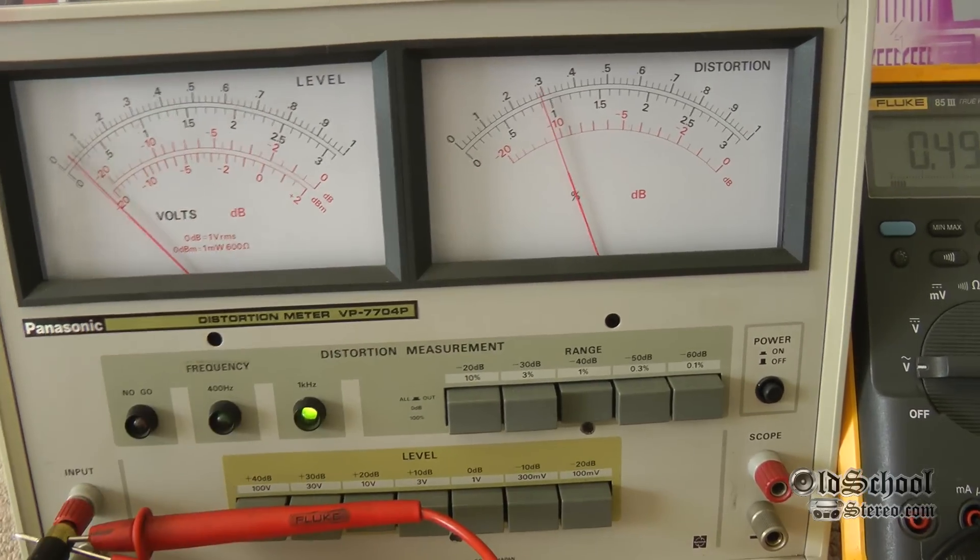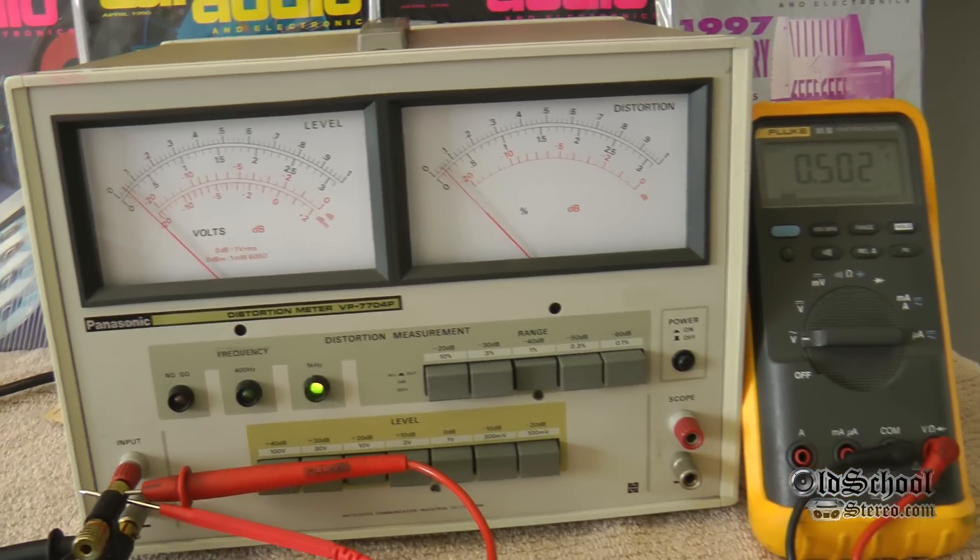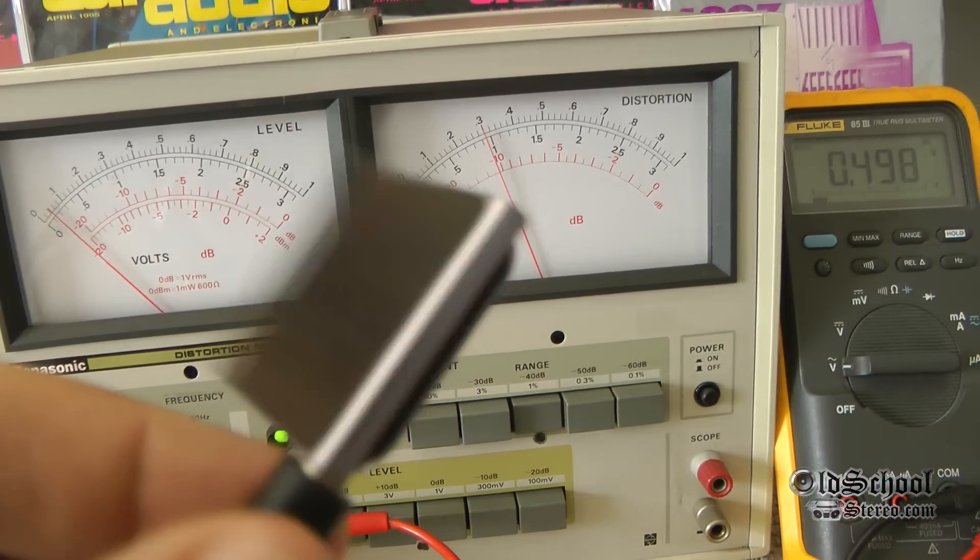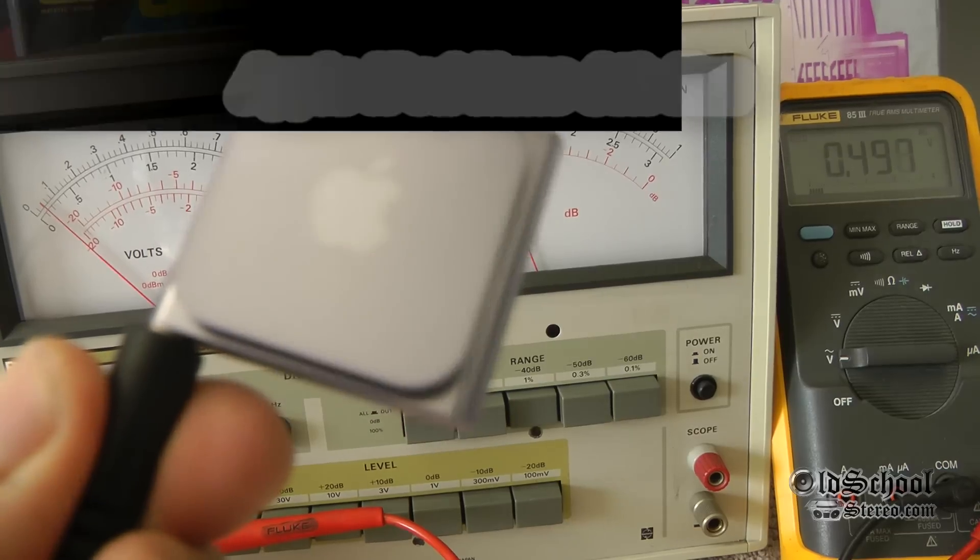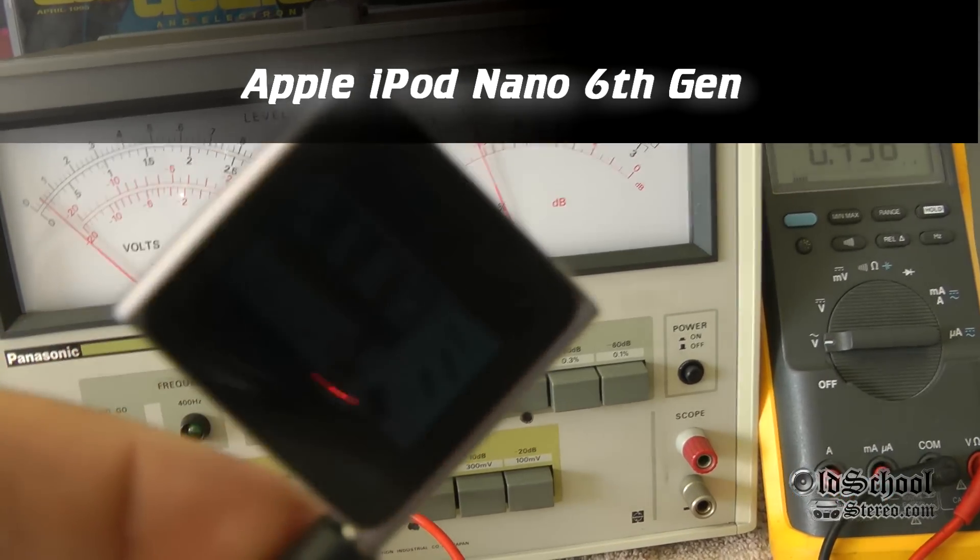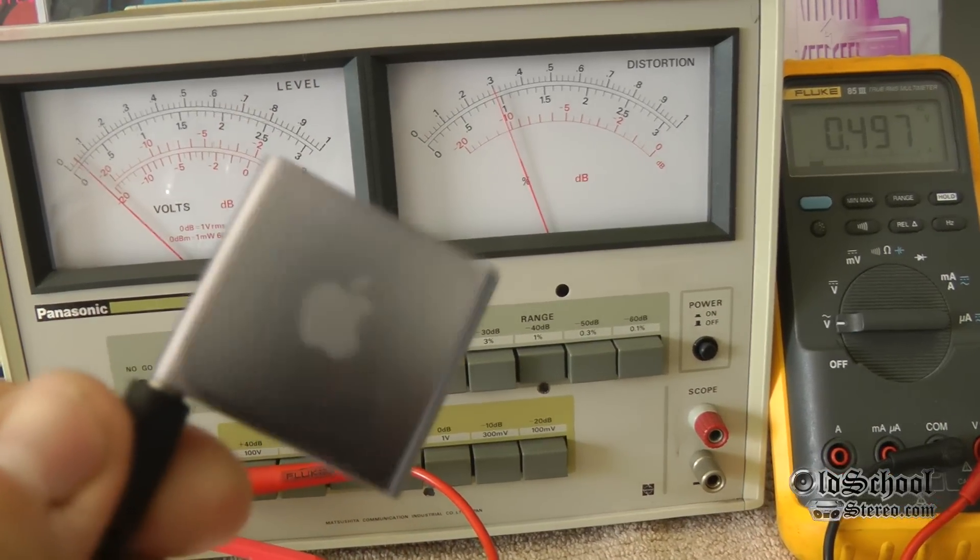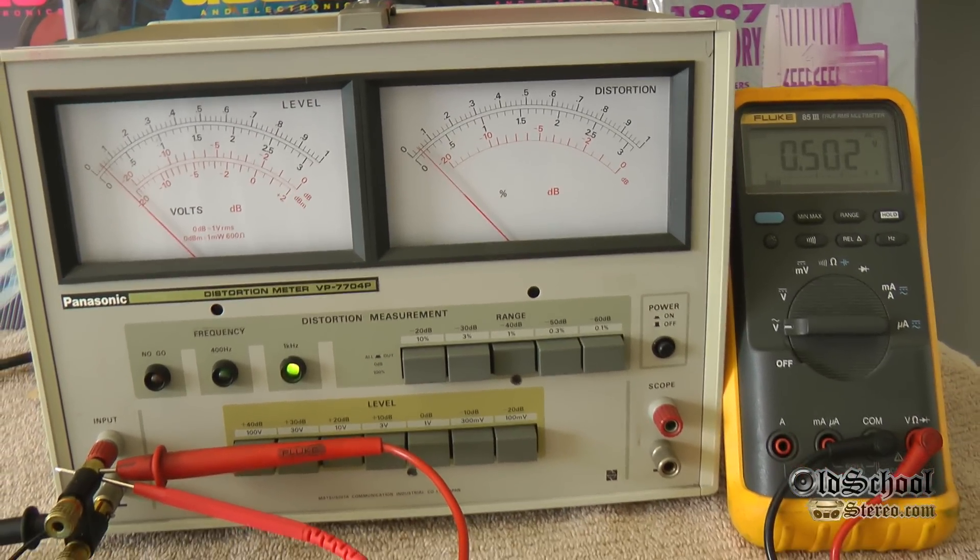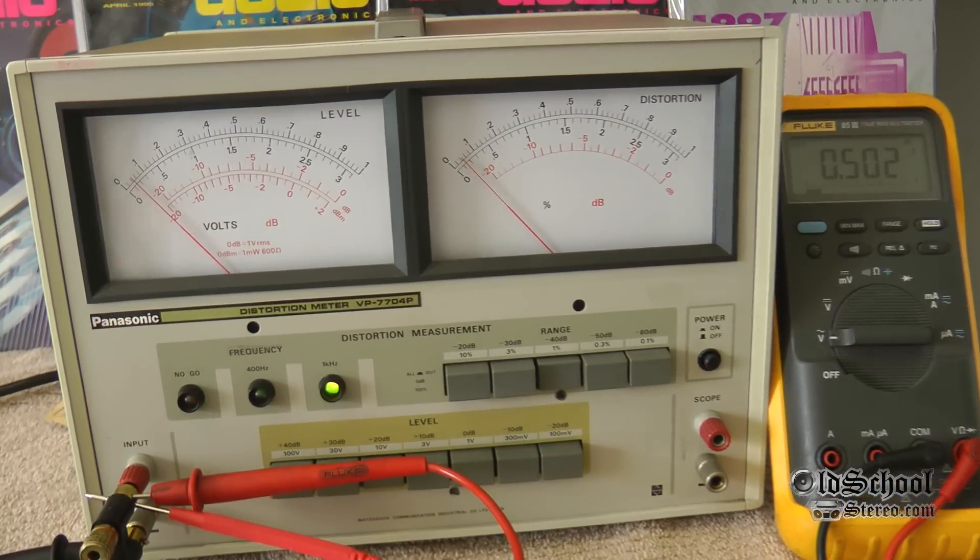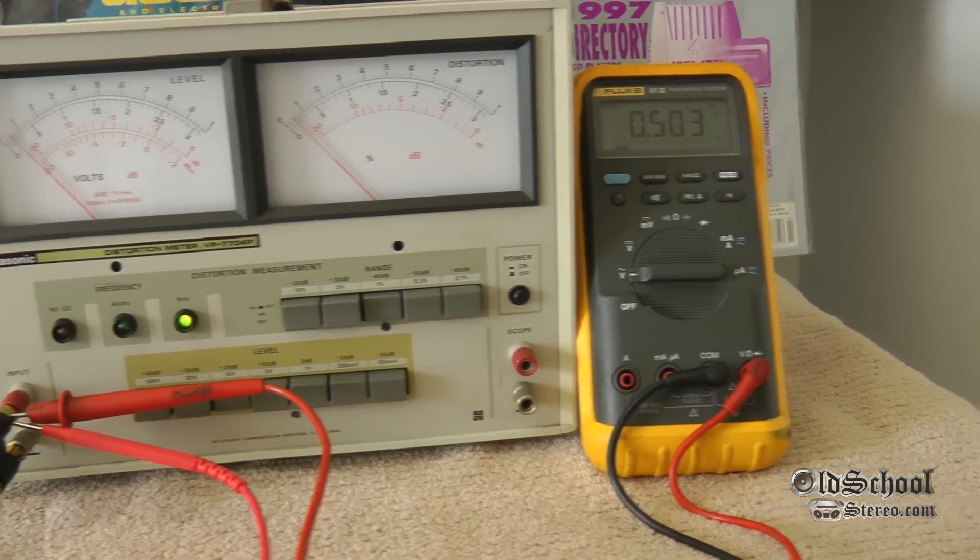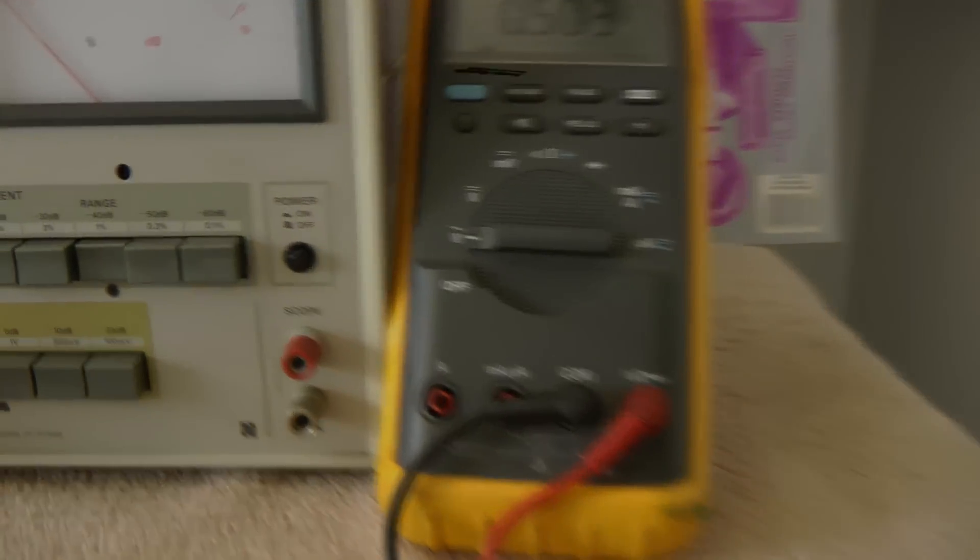So anyway, just a quick little test of the Apple iPod Nano. I have no idea what generation this is, but it's the one that's really small, so it makes sense, right? Nano, small. So anyway, another test of the Panasonic VP7704P. This is Big D Whiz from oldschoolsteria.com. Until next time, I'm out of here.